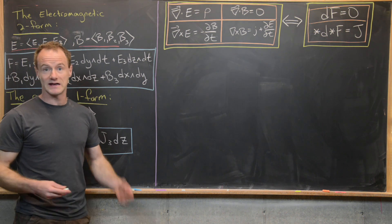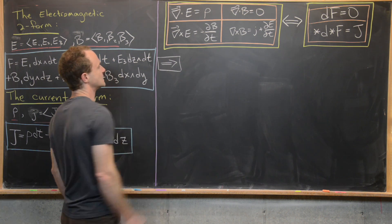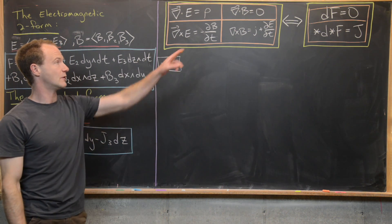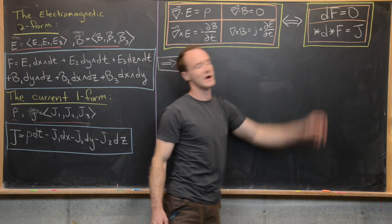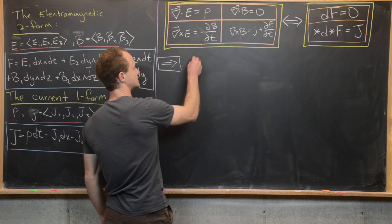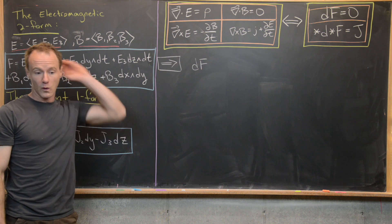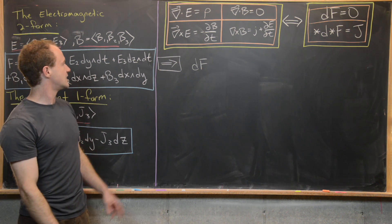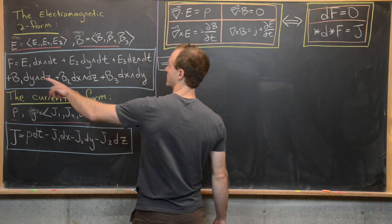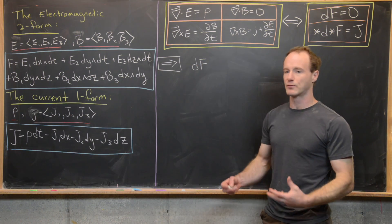Let's dive into the calculation in the forward direction — supposing the four vector calculus equations hold and showing the two differential form equations hold. We want to compute dF. To take the exterior derivative, we sum over all partial derivatives of each component, wedging in the appropriate one-form.